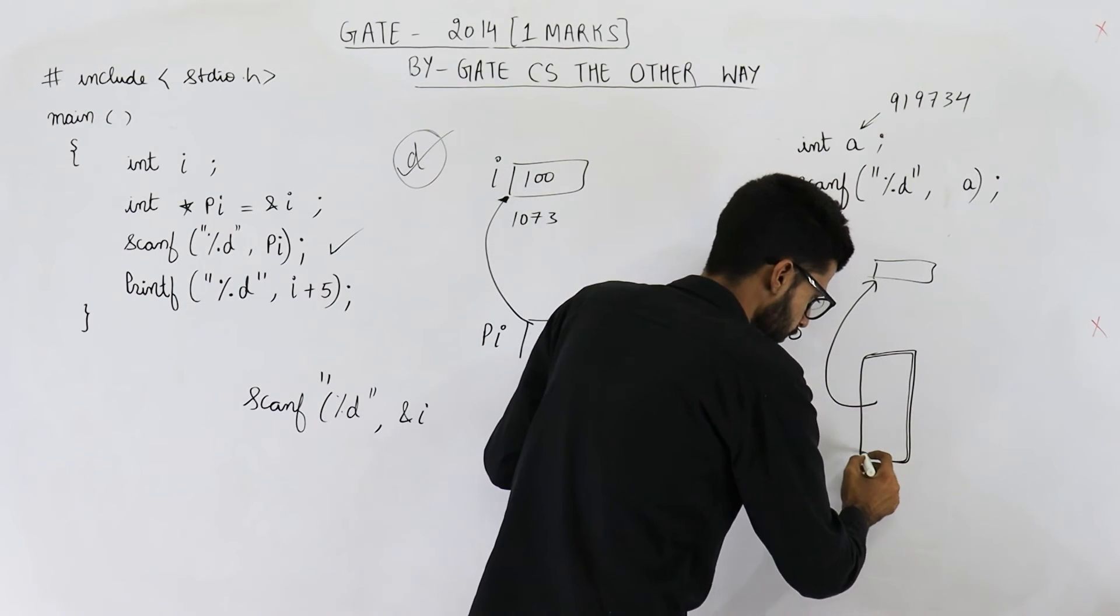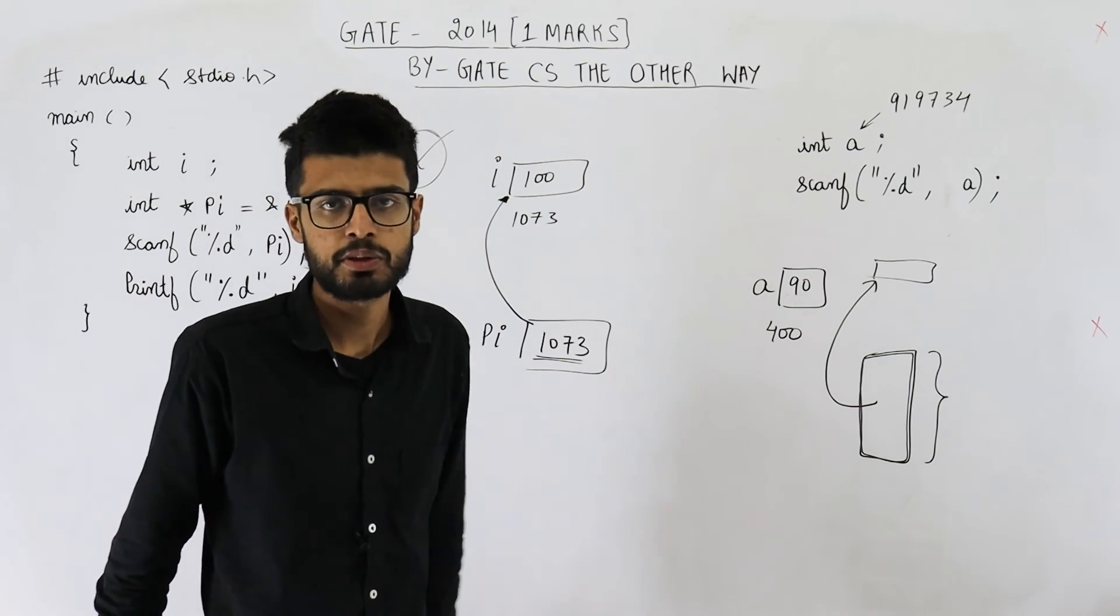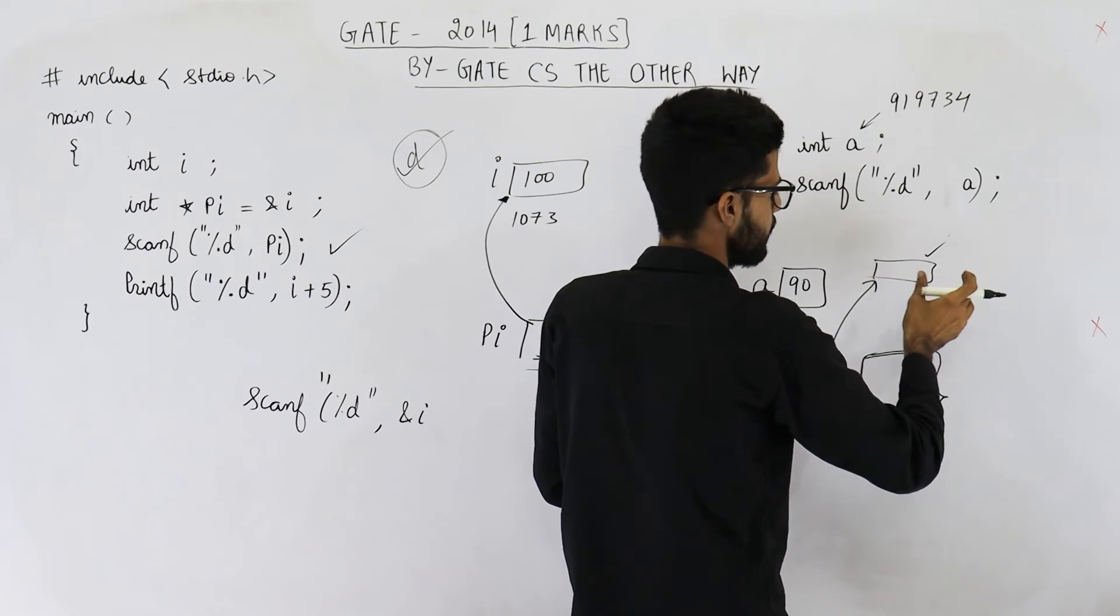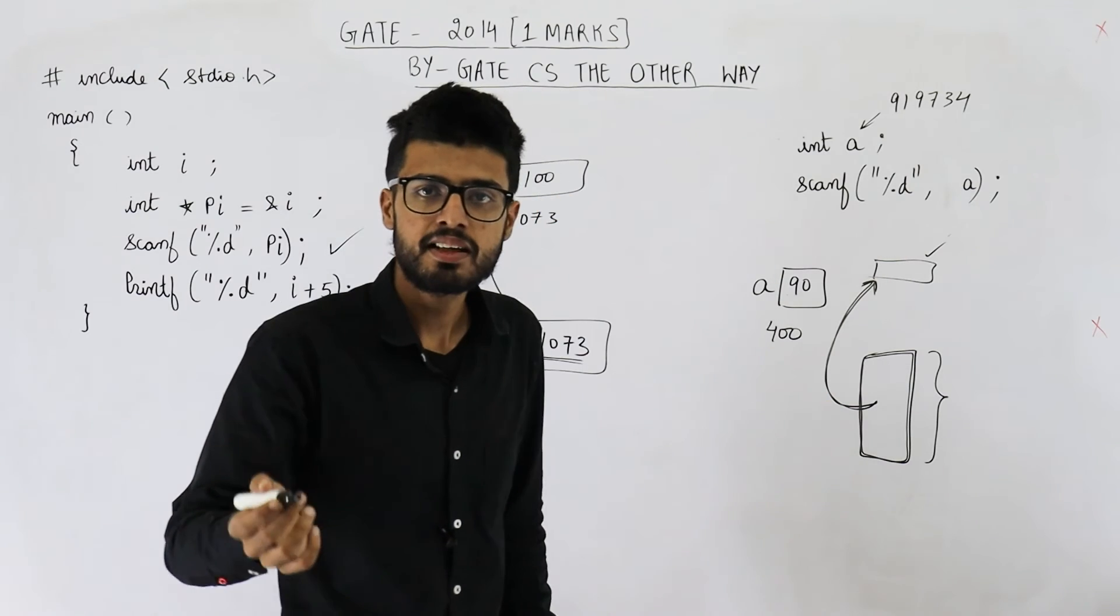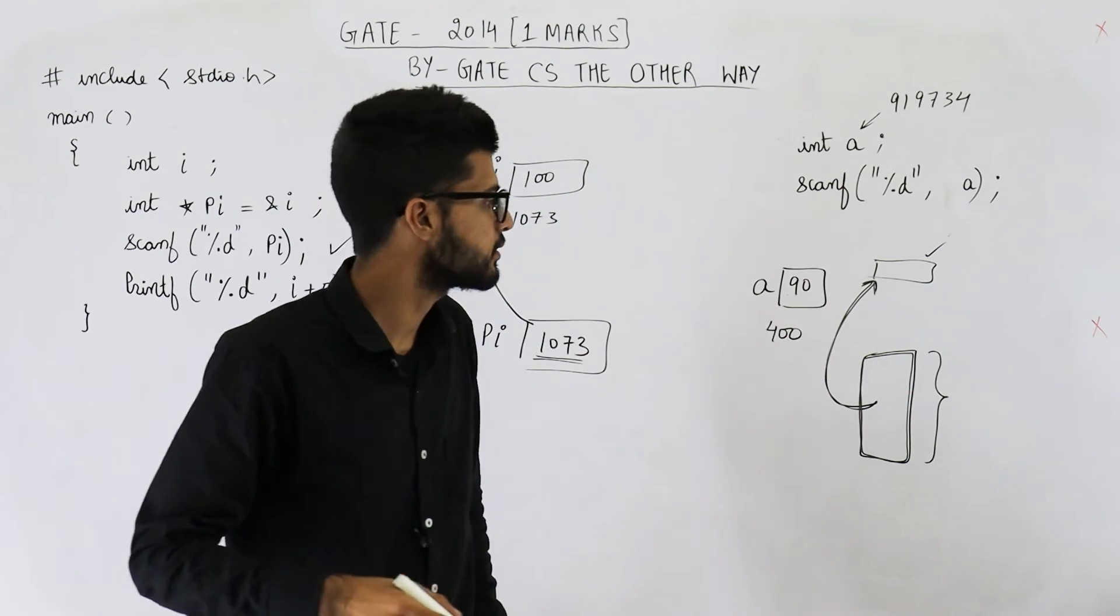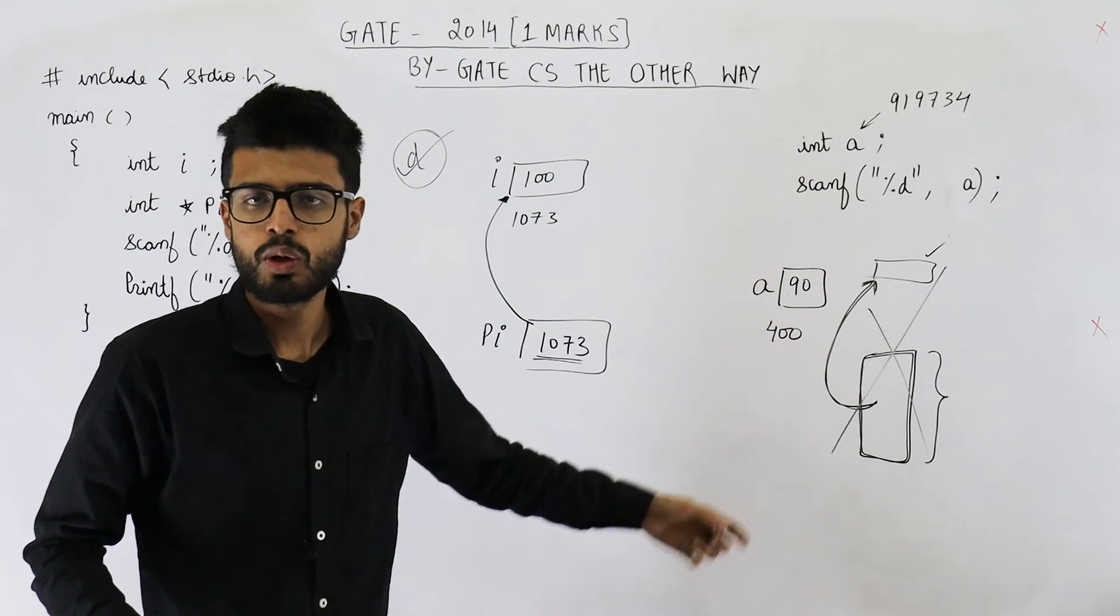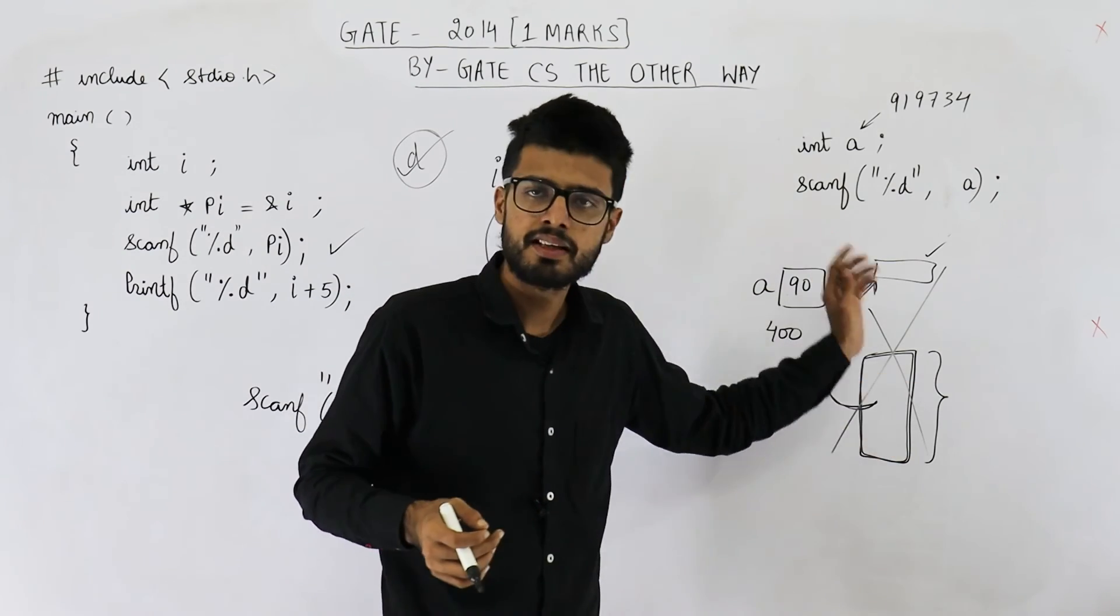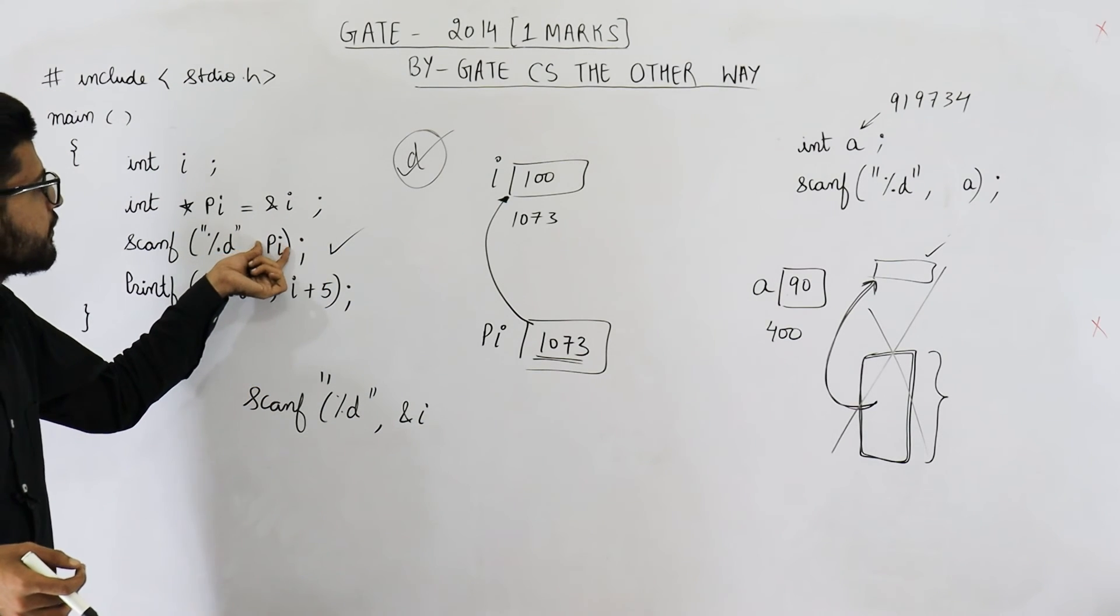Now suppose this is your program. So all these addresses program can access. This is address space of the program. But this is that address 919734, whatever it is. Suppose that address is here. The program is trying to access an address which it is not allowed to access. In this case, there is a memory protection violation. Hence operating system will just not allow the program to access that memory location and this program will be terminated forcefully by the operating system. In this case, there may be a runtime error.